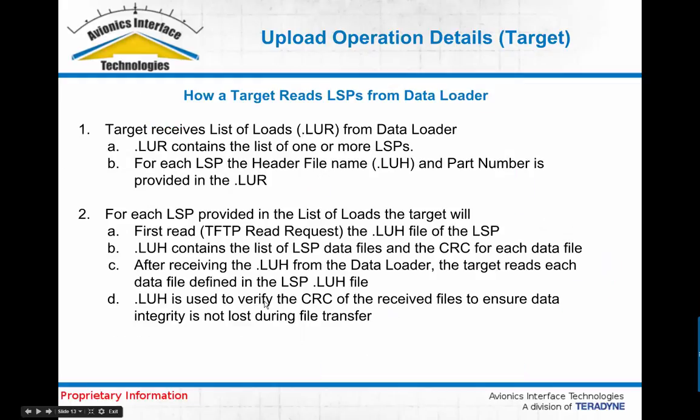How does the target process and read the LSPs from the data loader? At the beginning of the upload operation, the data loader provides a list of loads in the form of an LUR file to the target. That list of loads contains the file name and file part number of all the LUH files corresponding to the LSPs that the operator is trying to load to the target. From that LUR file, the target has the list of all the LSPs or header files, and for each LUH file or LSP specified, it will do a read request for the associated LUH file from the data loader.